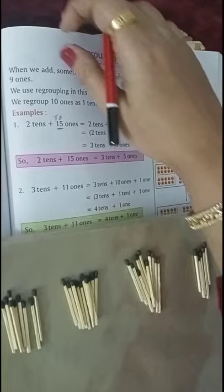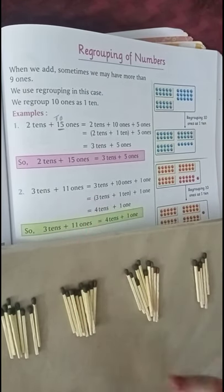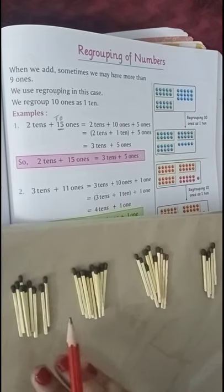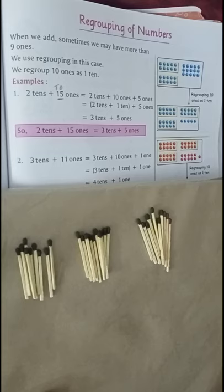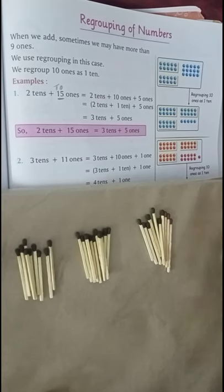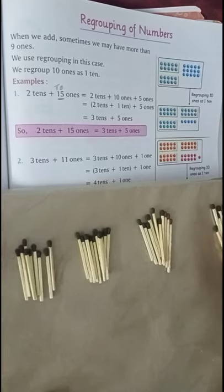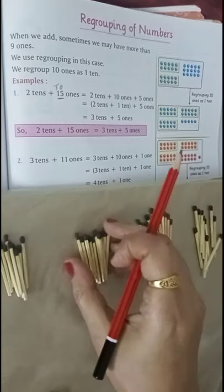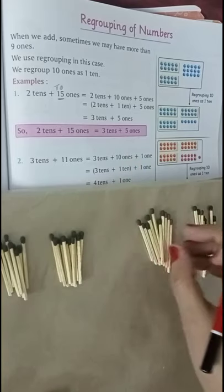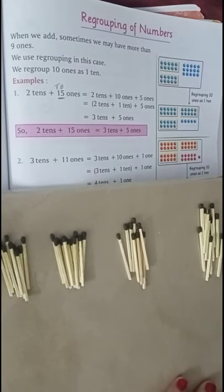Our second example is 3 tens plus 11 ones. We have already 3 tens here. 3 tens plus 11 ones. I have 11 ones with me. It's very difficult to handle without rubber band. 11 ones are here. This is 1 ten, 2 tens, 3 tens plus 11 ones.